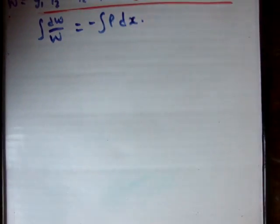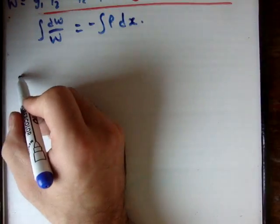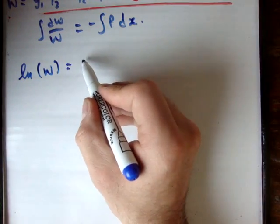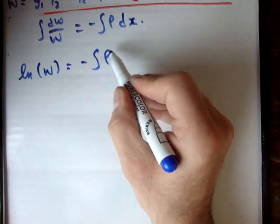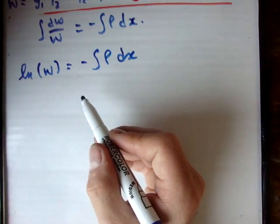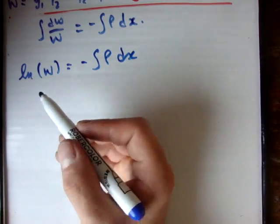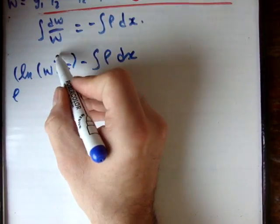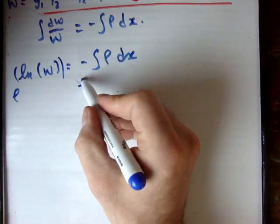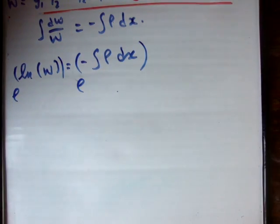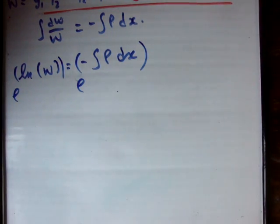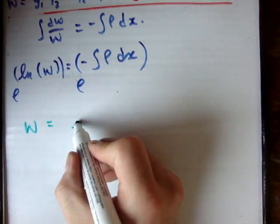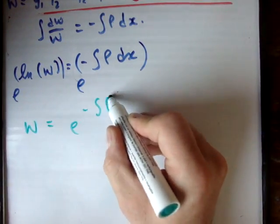The left side is a logarithm, so we get ln(w) equals negative the integral of p dx. Taking an exponential on both sides — since the exponential and logarithm are inverse functions and cancel — we get w equals the exponential of minus the integral of p dx. You should recognize this as an integrating factor.